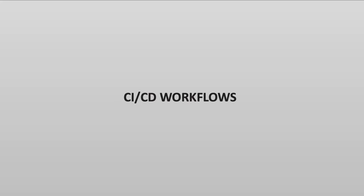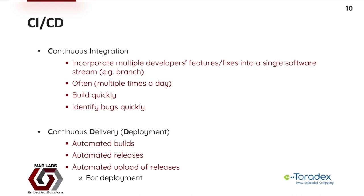Next, let's see how CI/CD workflows can help mitigate some of the typical issues associated with the software development lifecycle — how these workflows can minimize the manual steps and potentially reduce as much error as possible. CI/CD stands for Continuous Integration and Continuous Delivery or Deployment. Continuous Integration means that multiple developers can quickly iterate on their features and bug fixes, integrating their work into a single software stream such as a branch in Git. This should happen often, potentially even multiple times a day, so the code base can be built quickly and bugs can be identified and features tested quickly.